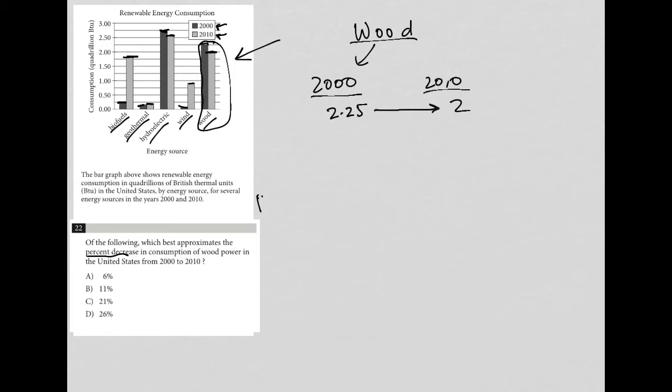So percent decrease just means you have a total or whole amount, and then you're going to subtract a percent of the whole to get to your new number. Hopefully that makes sense in a very logical way.